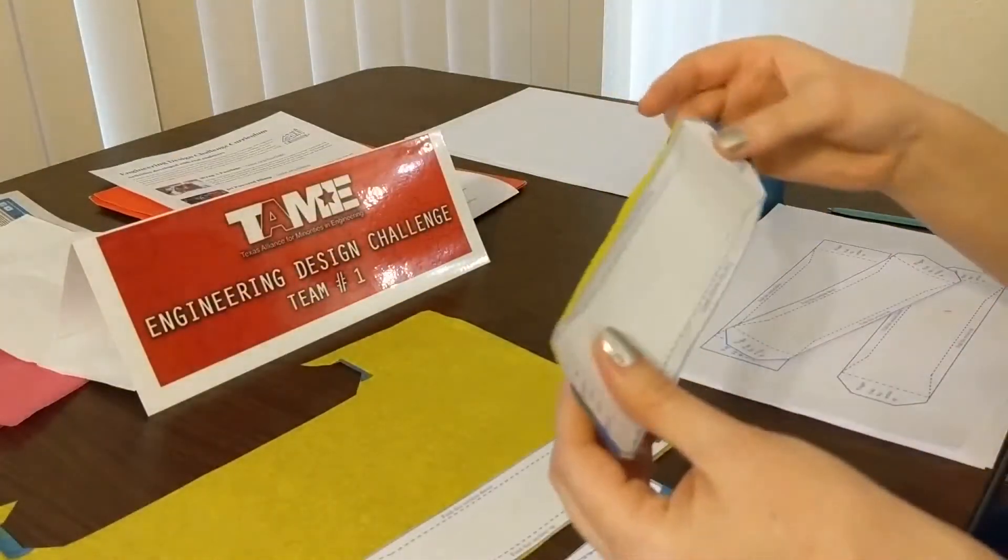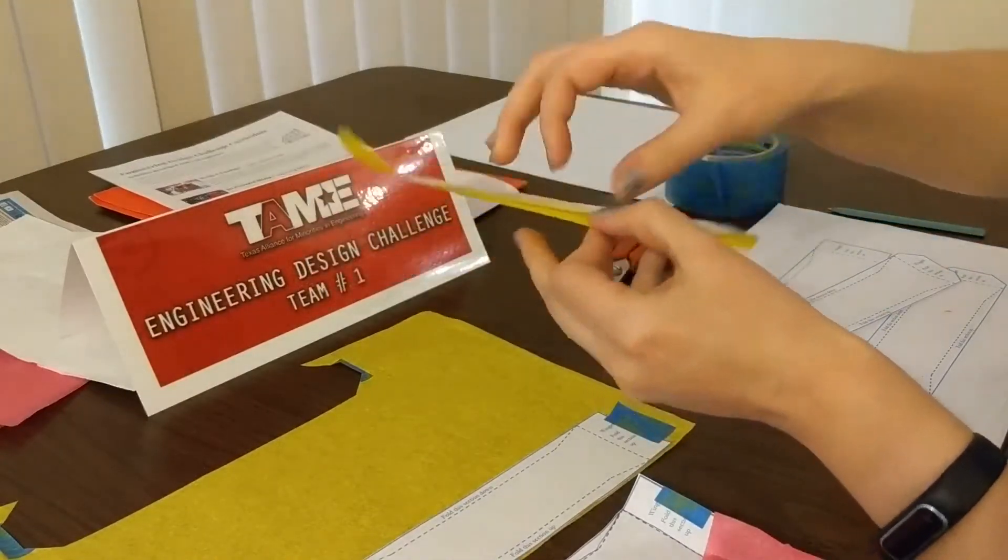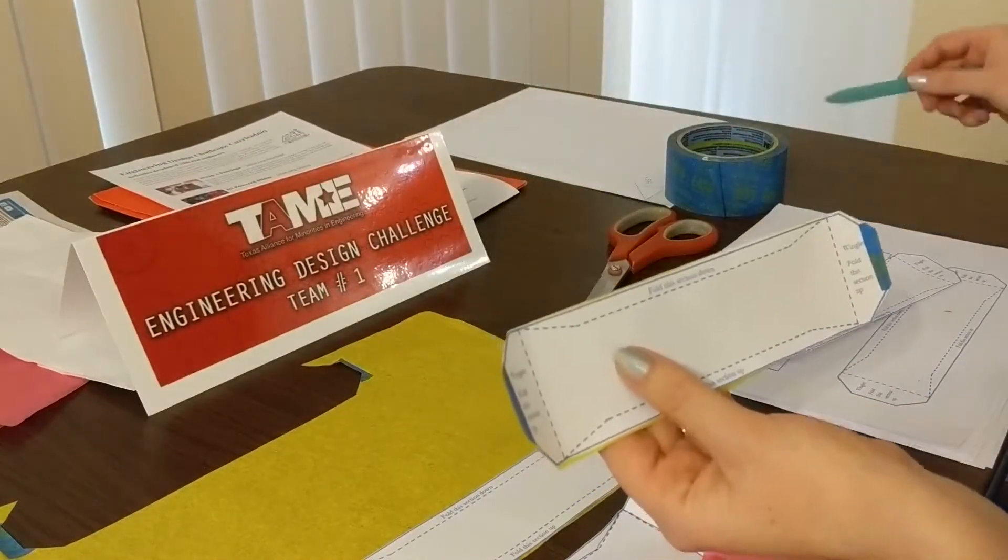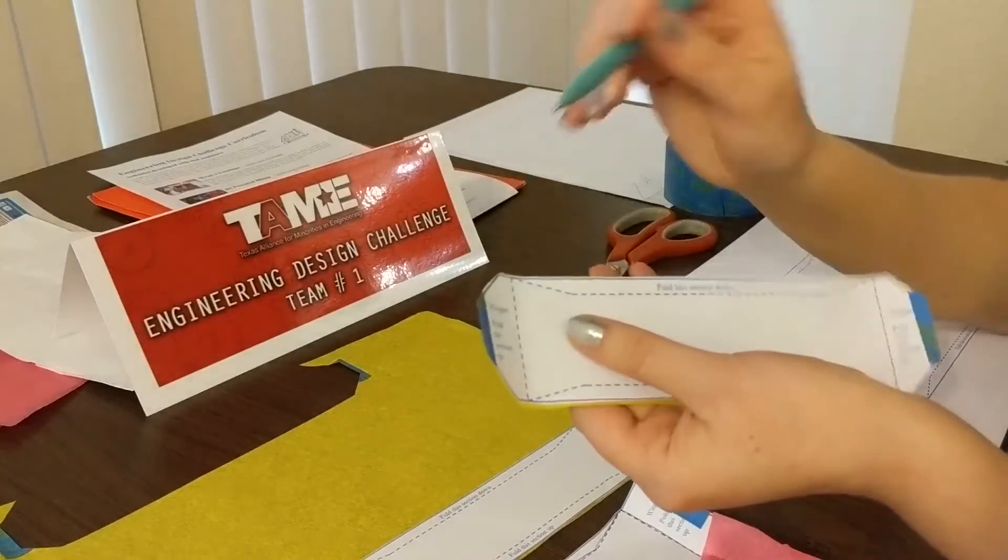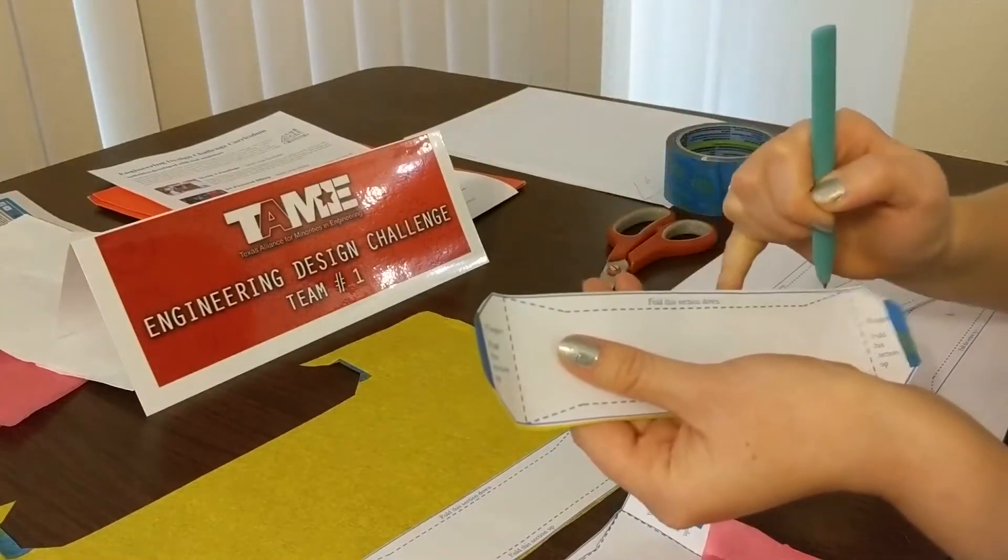And so an example of that, here's one that's already been taped together. And you're going to want to make sure that they stay attached along the edges. So you've cut that out. You're going to take your ballpoint pen and the ballpoint pen doesn't need to have any ink in it.